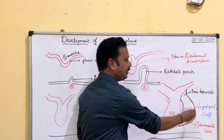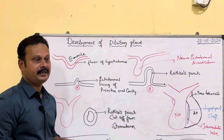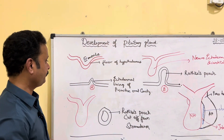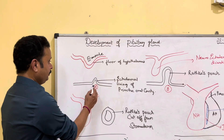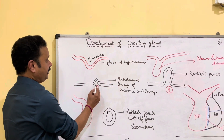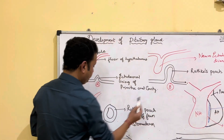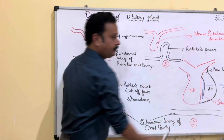How do these parts of the pituitary gland develop? In this diagram, stages A, B, C and the final development are illustrated.